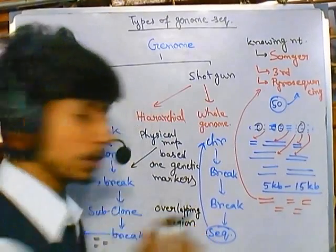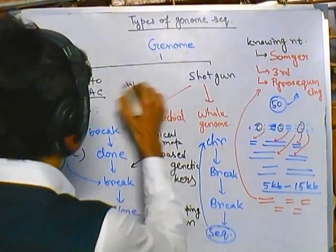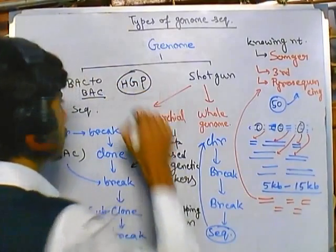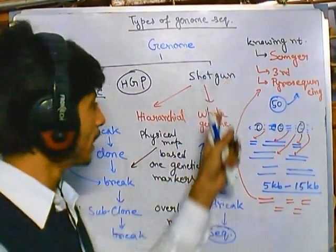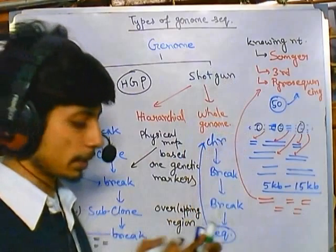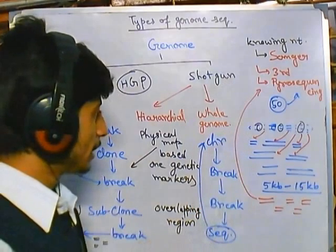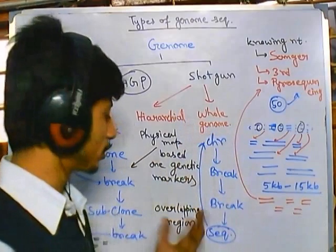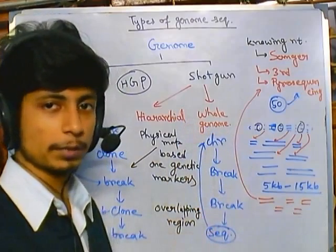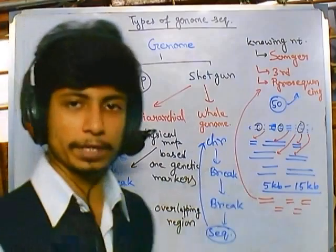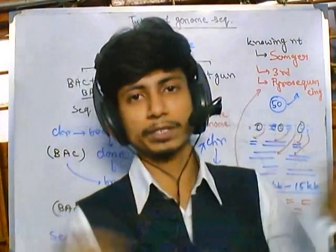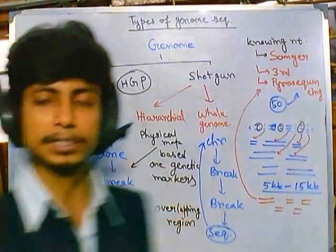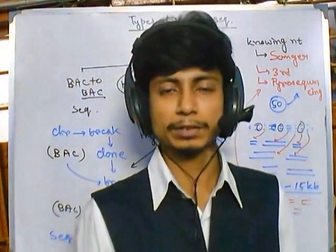The Human Genome Project, or HGP, was done using the shotgun sequencing method — specifically the whole genome shotgun method. Though this method is easy to perform, going backward to reconstruct the genome is very difficult because it sometimes gives wrong sequences, and there are many repeat sequences in the human genome, so merging those repeats can be a problem. That is the basic overview of the two types of genome sequencing.